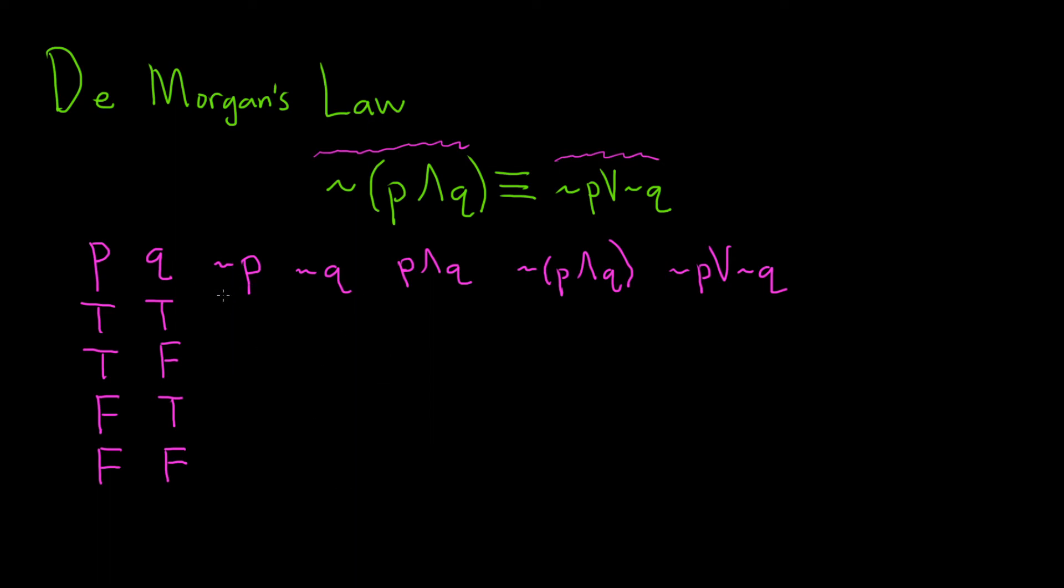So not p is the negation of p, so it just takes on the opposite truth value that p takes on. So we'll just get false, false, true, and then true. Just switching the truth value for p.